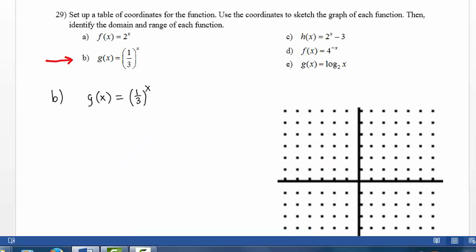In Part B, we are going to graph the function g of x equals 1 third to the x power. We will do this by setting up a table of coordinates for this function.